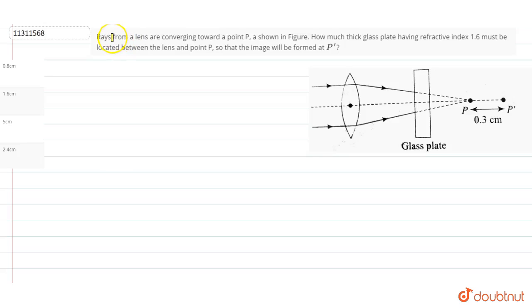The question asks: rays from a lens are converging towards a point P as shown in the figure. How much thick glass blade having refractive index 1.6 must be located between the lens and point P so that the image will be formed at P'?